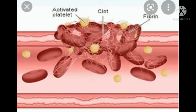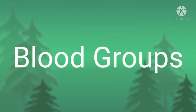Blood platelets are a separate group of cells which do not have a nucleus. They are disc-like. Whenever a blood vessel is injured, platelets accumulate at the site of injury and help in the formation of a blood clot. The clot seals the wound in the blood vessel, preventing blood loss.